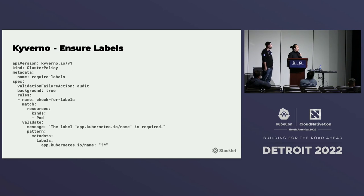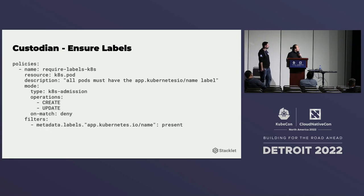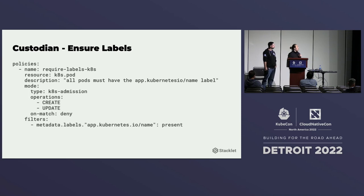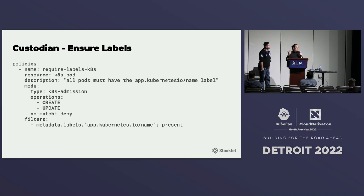Here's another example of what a policy looks like in Kyverno, and here's the equivalent in Custodian — again, a bit more concise. For different use cases you may want to pick Kyverno, but for existing Custodian users, one of the initial goals with the Kubernetes provider is to provide something that's fairly native and familiar.